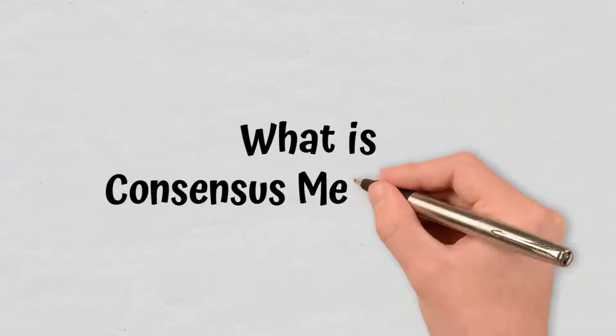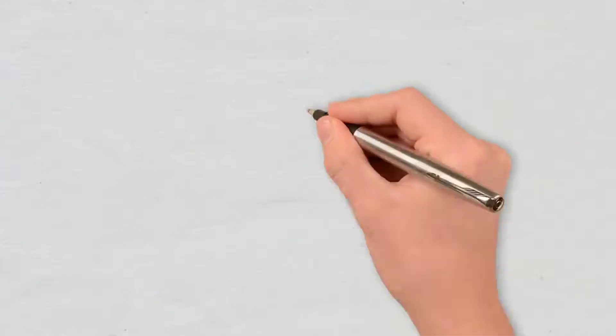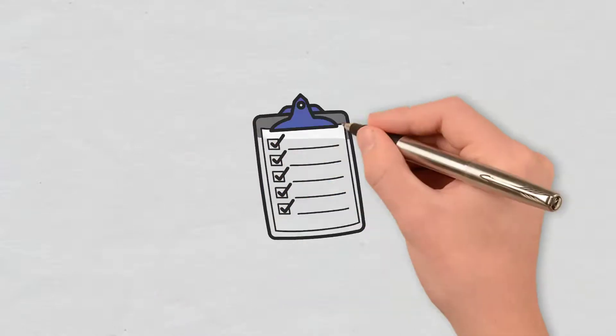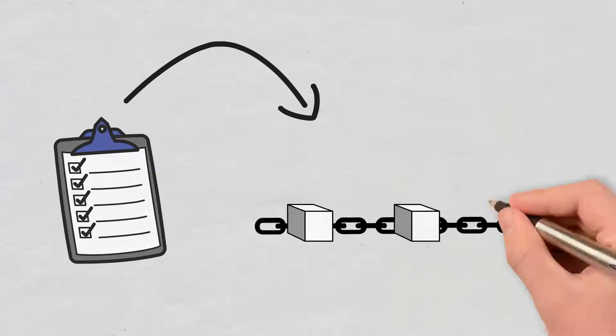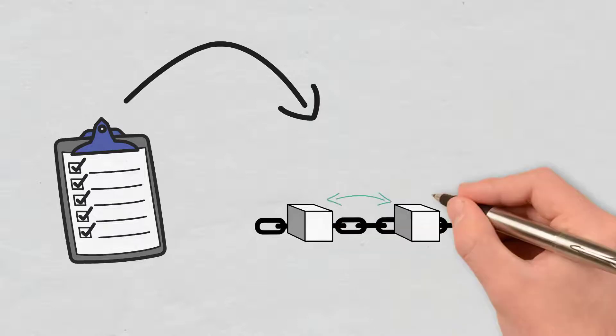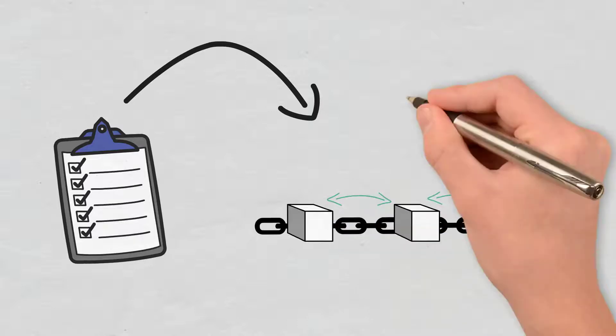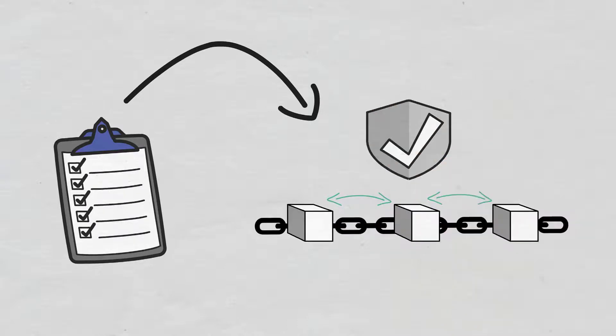What is consensus mechanism? Consensus mechanisms represent protocols that have the role of making sure that all nodes on the blockchain are synchronized with each other and that they agree on which transactions can be added on the blockchain.